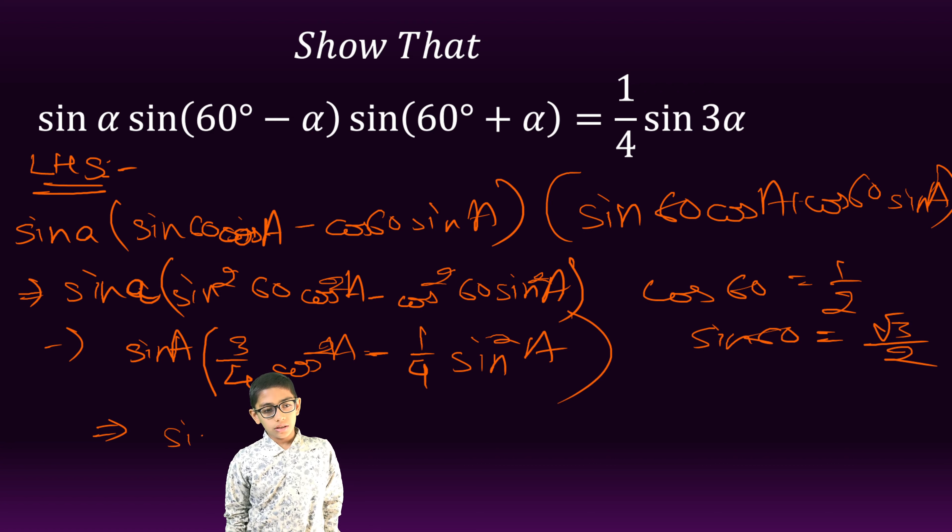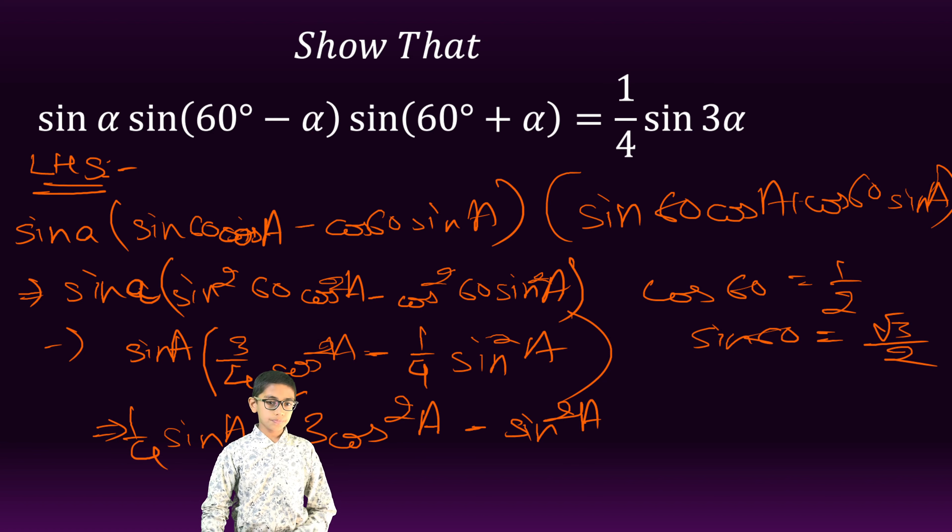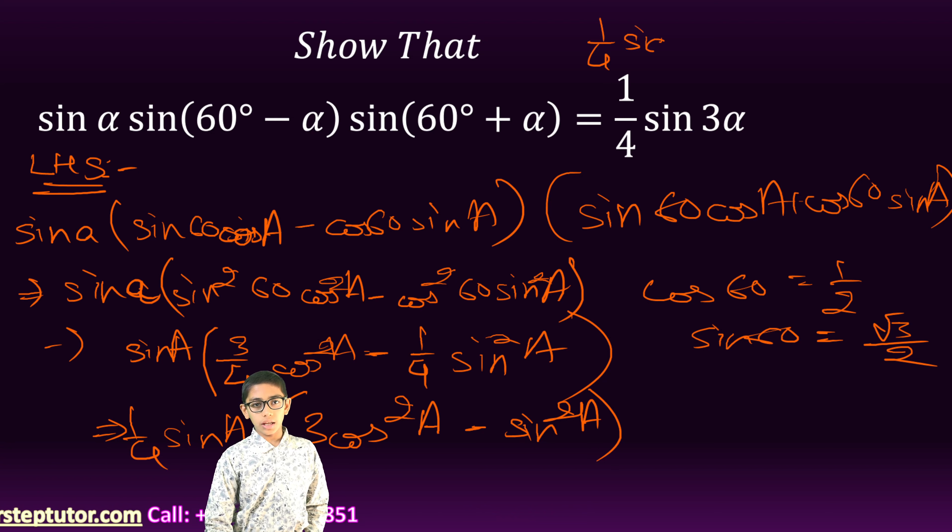We will get sin A, 1 upon 4 sin A multiplied by 3 cos square A minus sin square A. And in the RHS, we have 1 upon 4 sin A multiplied by 3 minus 4 sin square A.